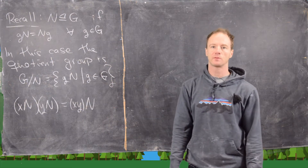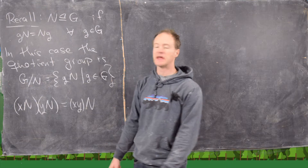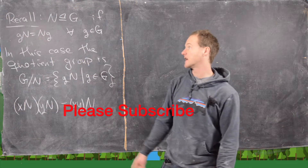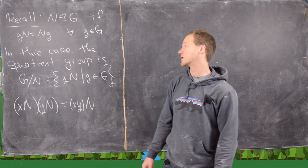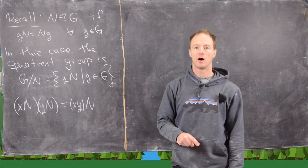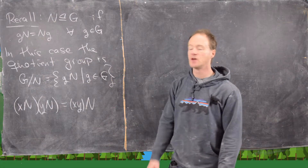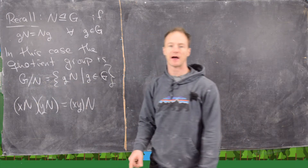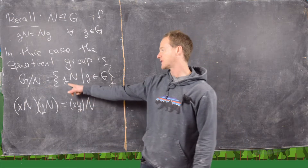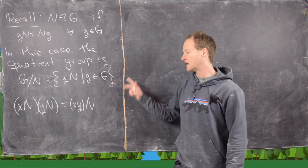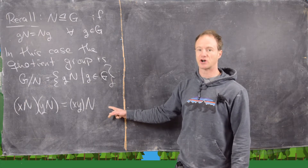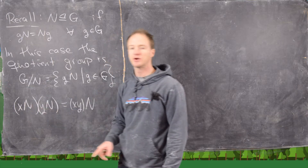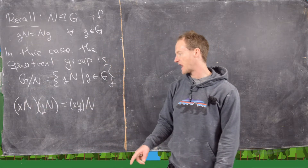Let's recall that we say N is a normal subgroup, written N ▷ G, if the left coset gN is equal to the right coset Ng, and that has to hold for all elements from the group. In this case we have an important construction called the quotient group, written G/N or G mod N, which is the set of all left cosets. When N is normal, we have a group structure where the group operation on cosets is: xN times yN equals xyN.